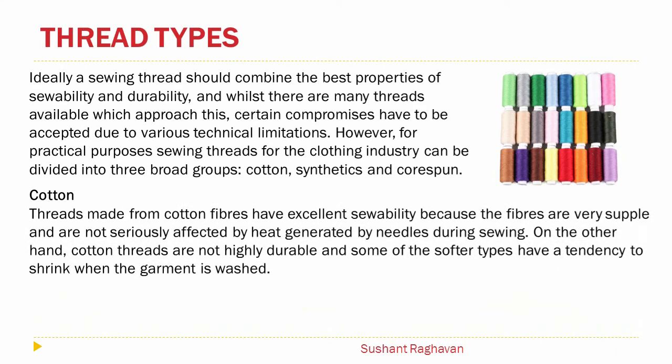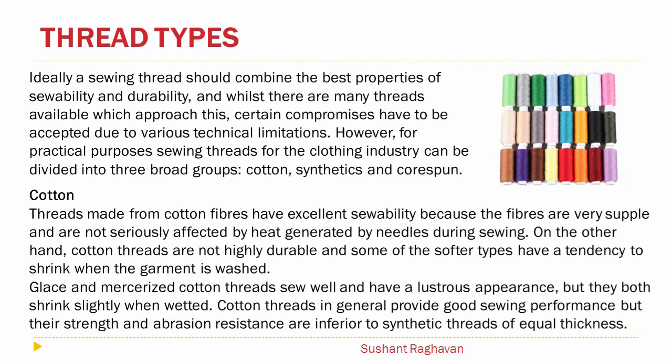Cotton. Threads made from cotton fibers have excellent sewability because the fibers are very supple and are not seriously affected by the heat generated by needles during sewing. On the other hand, cotton threads are not highly durable, and some of the softer types have a tendency to shrink when the garment is washed. Glazed and mercerized cotton threads sew well and have a luxurious appearance, but they both shrink slightly when wetted. Cotton threads in general provide good sewing performance, but their strength and abrasion resistance are inferior to synthetic threads of equal thickness.